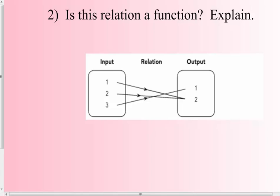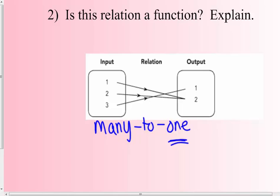Is this relation a function? Ask first: what kind of relation is this? Many to one. As long as the word after 'to' is 'one' — many to one, one to one — they are a function. Is it a function? Yes, because each input has exactly one output.